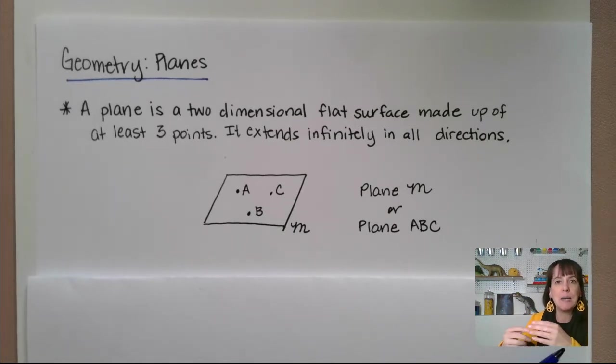A good example of one would be like a six-sided die, right? So you have a dice that you roll. A six-sided die is going to have six different planes that are all stretching infinitely in all directions. But first, let's talk about this one.